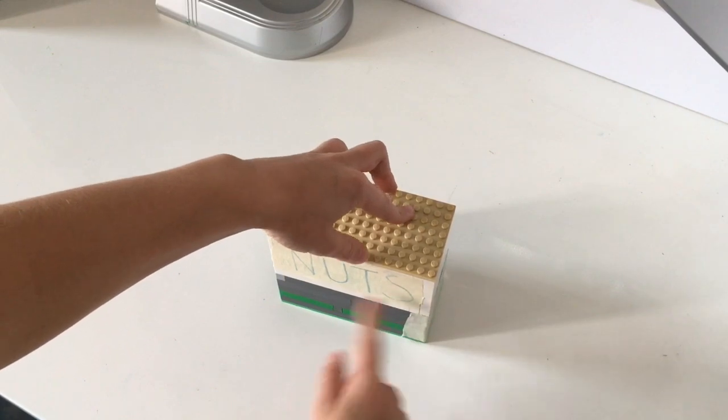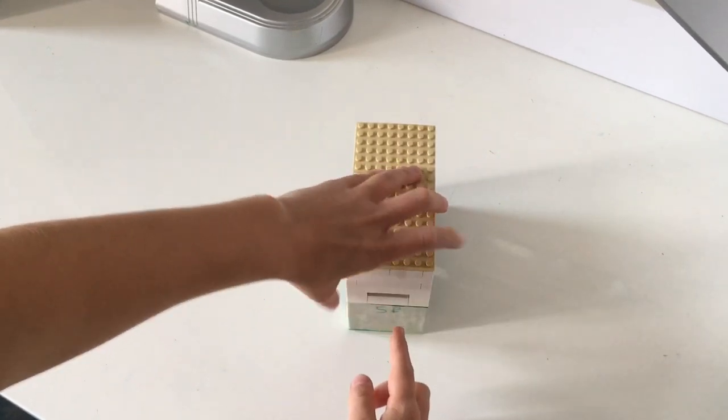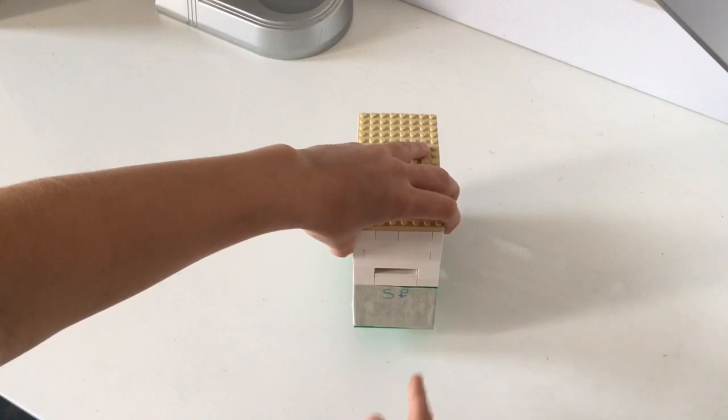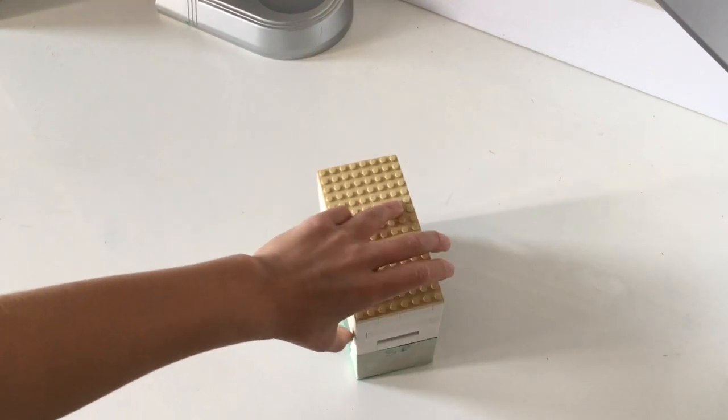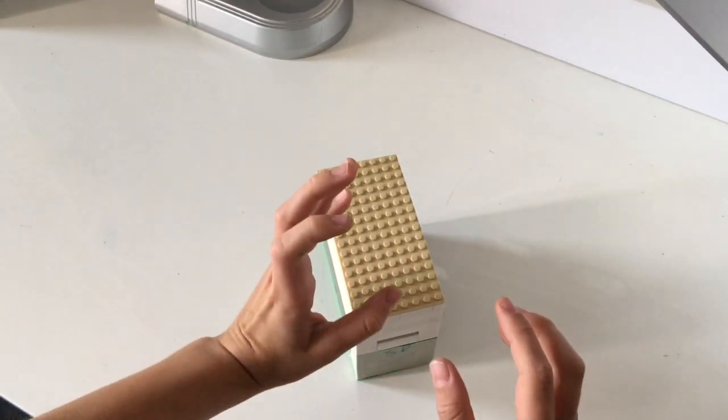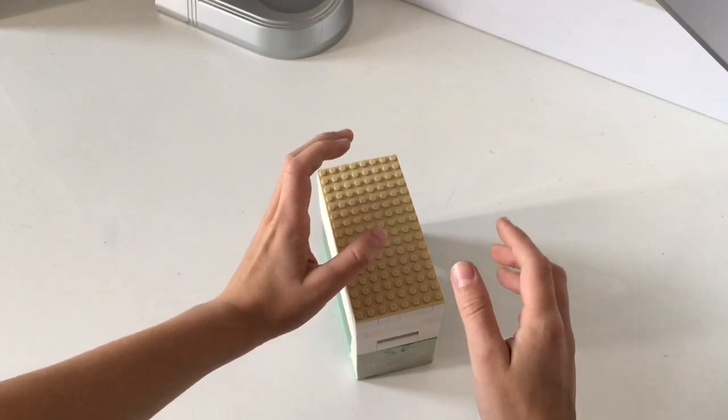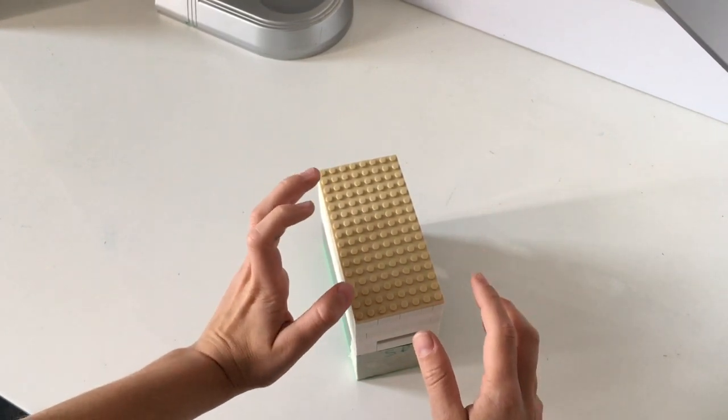On this side there are nuts, and in here there is a coin slot and it's written the price: five rubles. Let's try to cheat and throw coins that are less than five rubles.